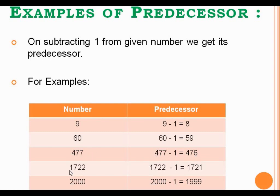Let's see another example. The given number is 1722. If we want to find out the predecessor of 1722, we have to just subtract 1 from 1722, so we will get 1721. So, 1721 will be the predecessor of the given number 1722.